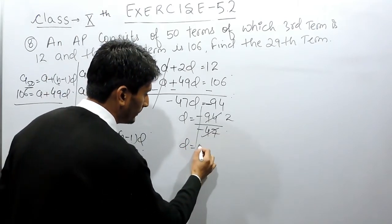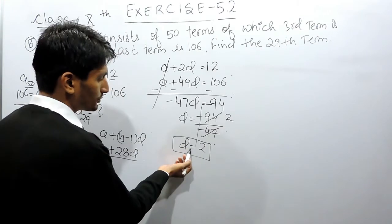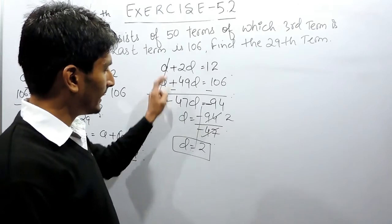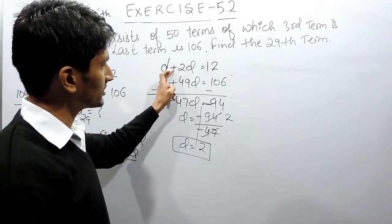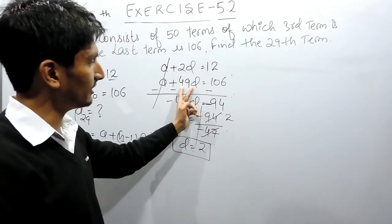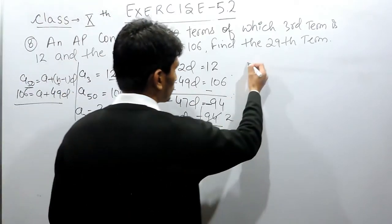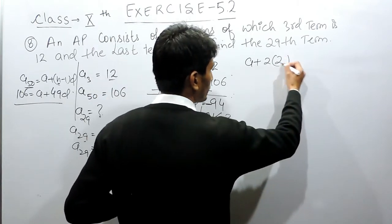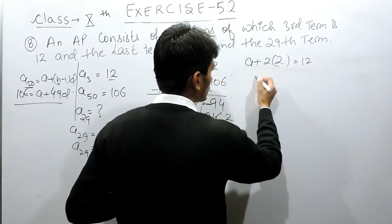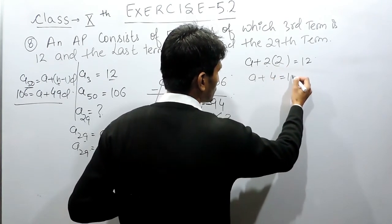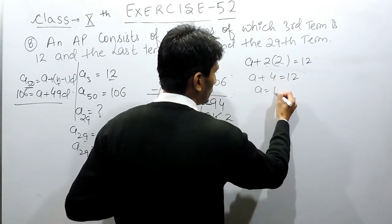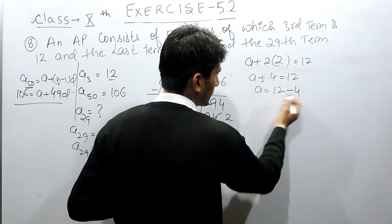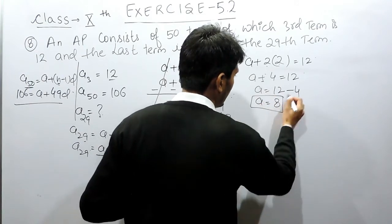And now if I substitute this common difference 2 into any of the equations, I will get the value of A. It is better to substitute this value in the first equation because here the calculation will be easier. So A + 2 into D, which is 2, equals 12. So A + 4 = 12. When the constant is shifted to that side it will become minus, so A will be 12 minus 4, and the first term will be 8.